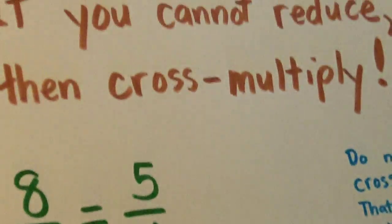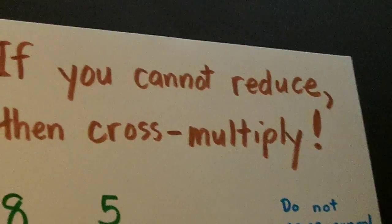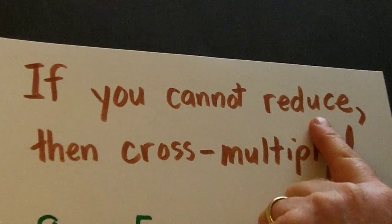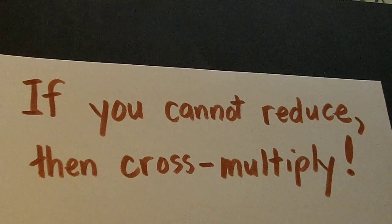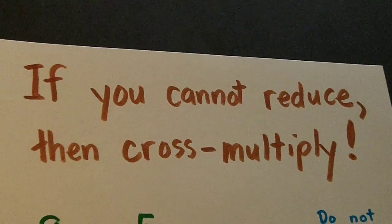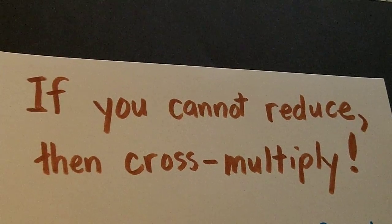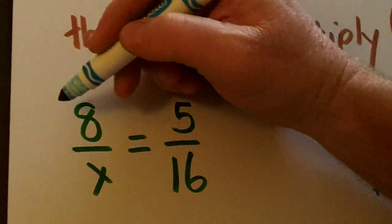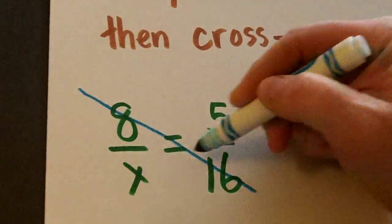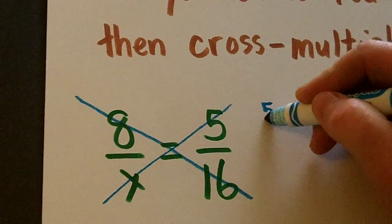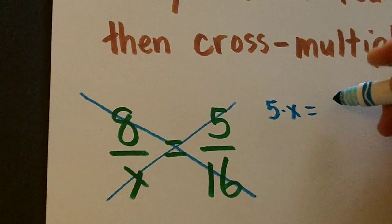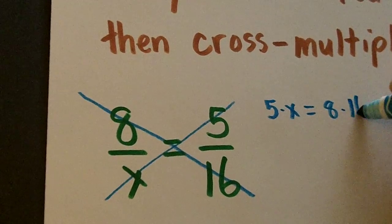Now, but all problems are not that easy. Now if you cannot reduce like we did on the last ones, then we're going to cross multiply. So watch what we do here. We're going to cross multiply just like this: 5 times X is equal to 8 times 16.